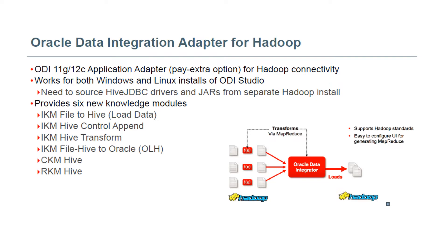CKM Hive is used to perform checks while loading data into Hive tables. RKM Hive is used to reverse-engineer the Hive tables present in Hadoop. The architecture shows Hadoop as a source with multiple systems integrated from Hadoop to ODI, where MapReduce at the Hadoop level is used for integration. ODI supports Hadoop standards with an easy-to-configure UI for generating MapReduce jobs.